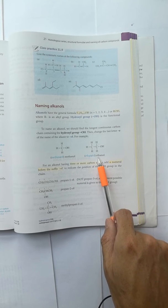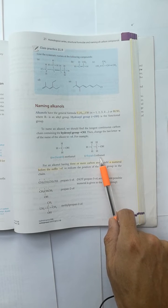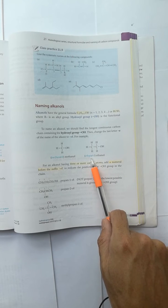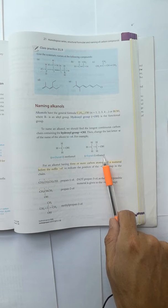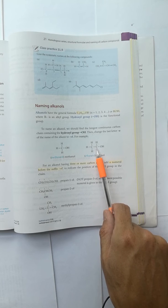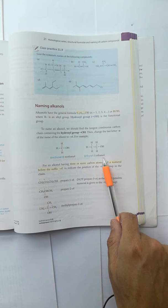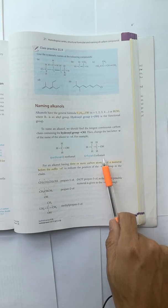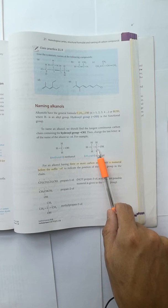Two carbons with no double bond is ANE, and OH becomes OL with E omitted, so it is called ethanol. And the OH is always drawn to the first carbon, so no need to mention the numbering, no need to say ethane-1-ol, because we understand that it is always at the first carbon.